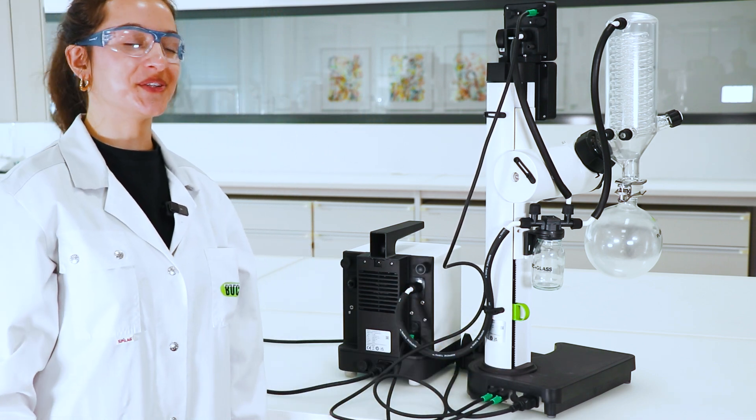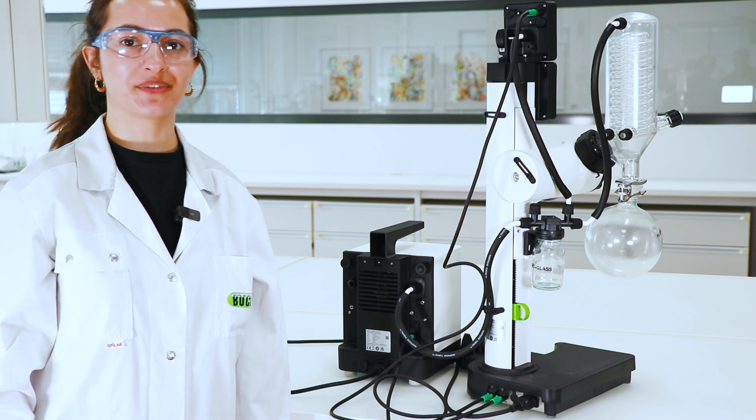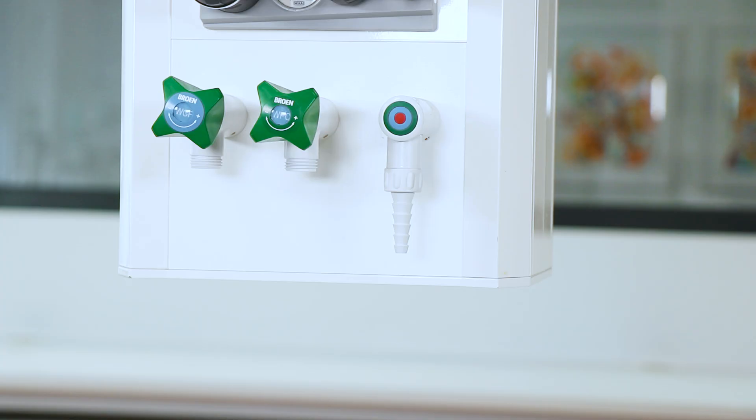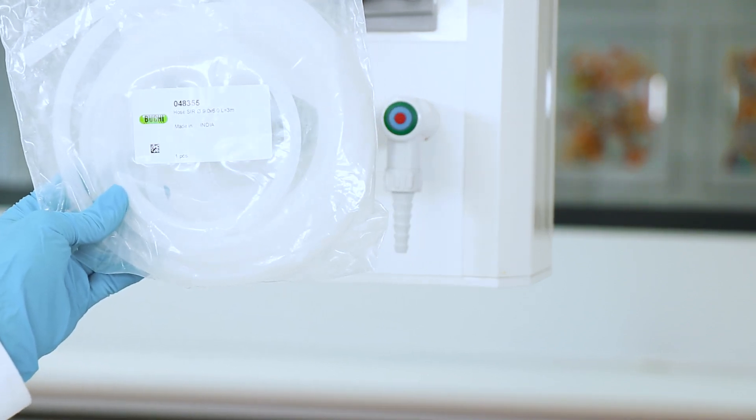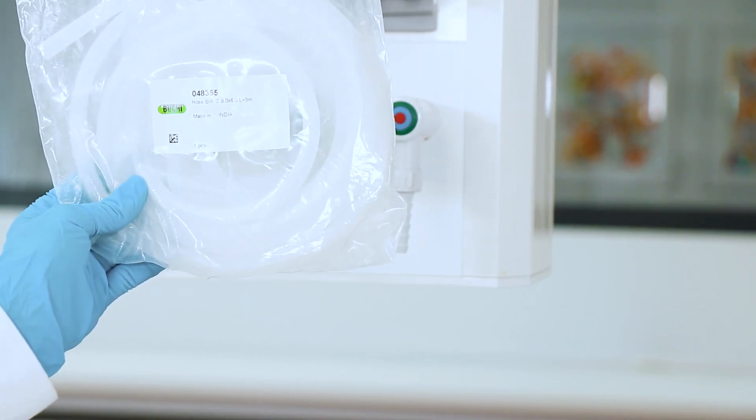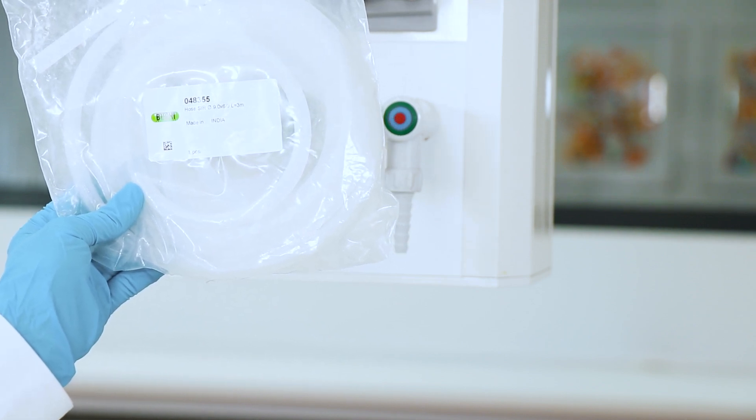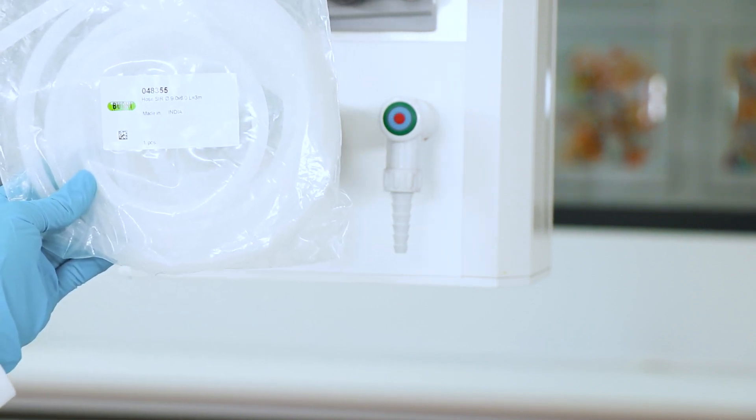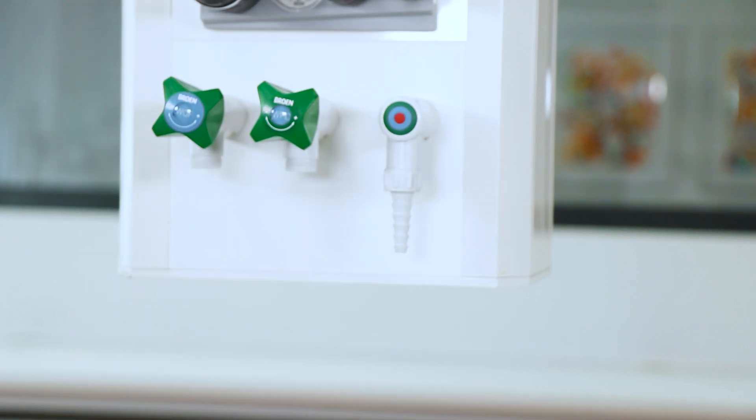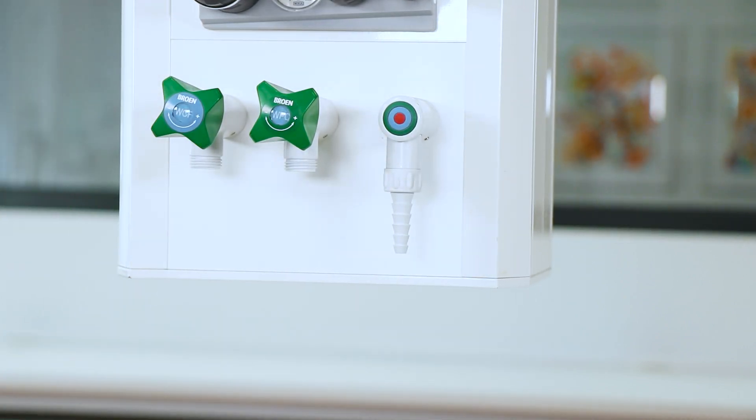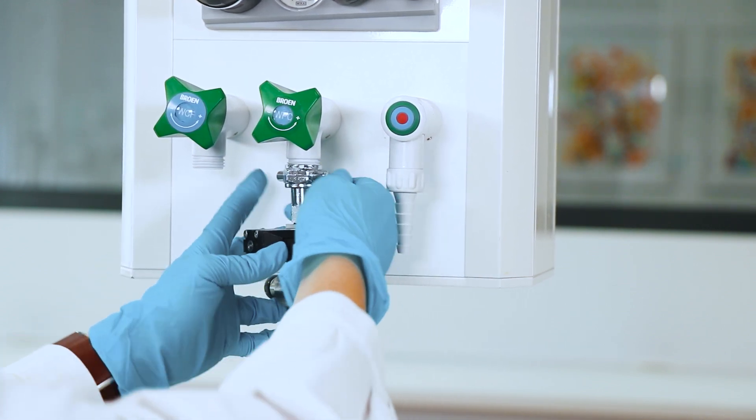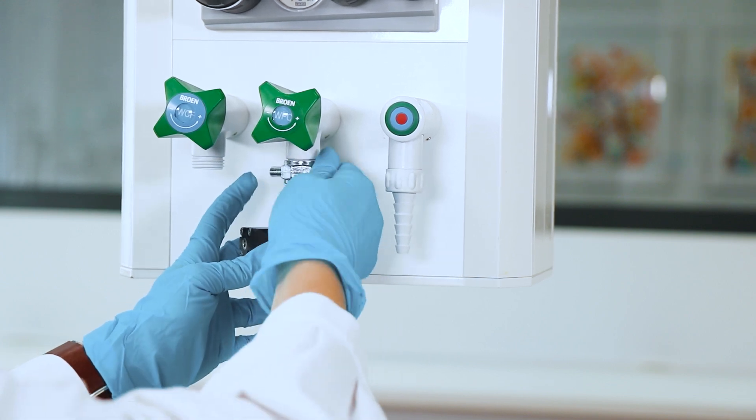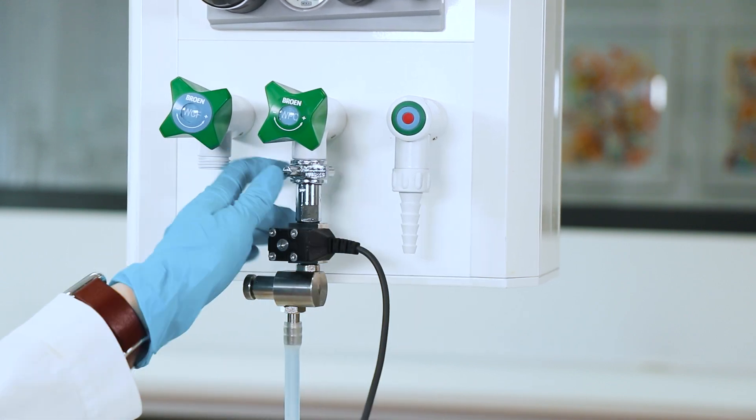Now the last thing we need to do is to connect the water, the cooling water. So then you take the cooling tube and you as well have to cut it into three pieces. We recommend two pieces about one and a half meters and one five centimeter piece. If you have a cooling water valve, you can connect it here. You connect it to your cooling water outlet.